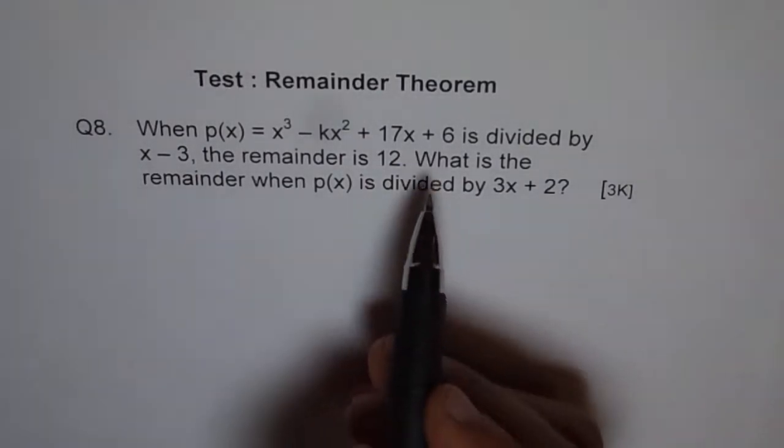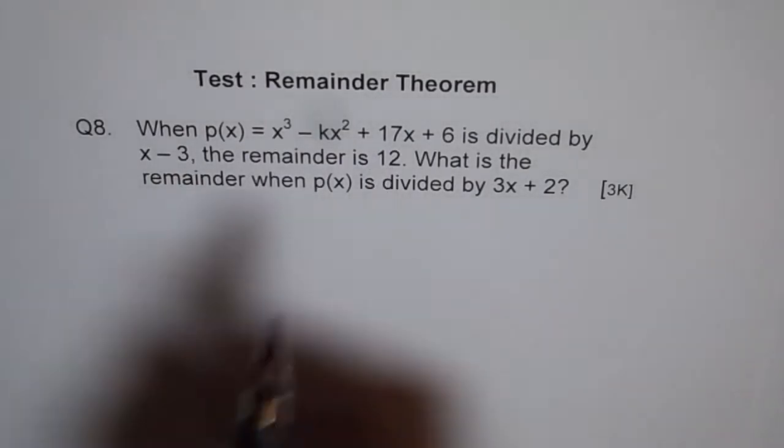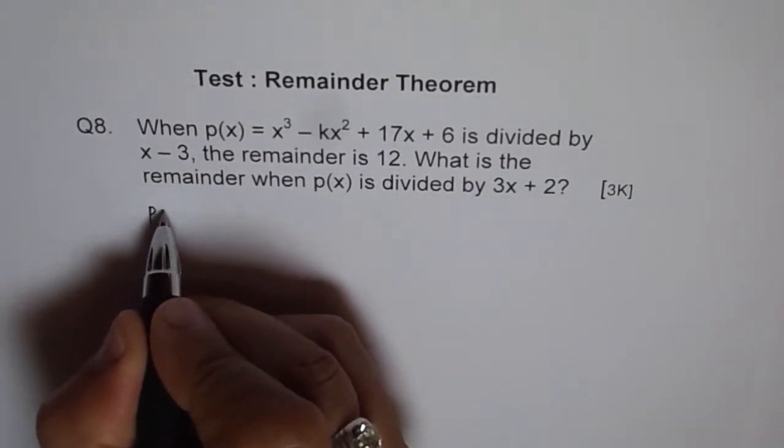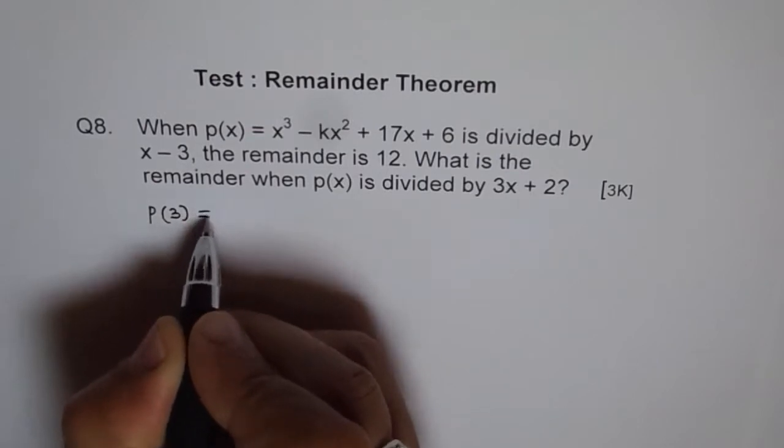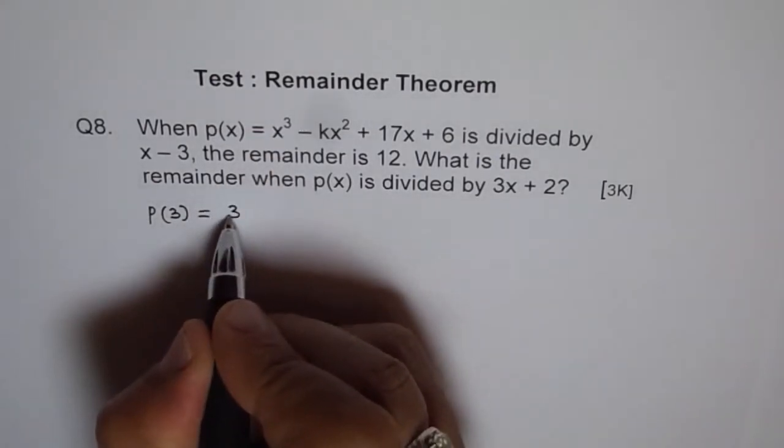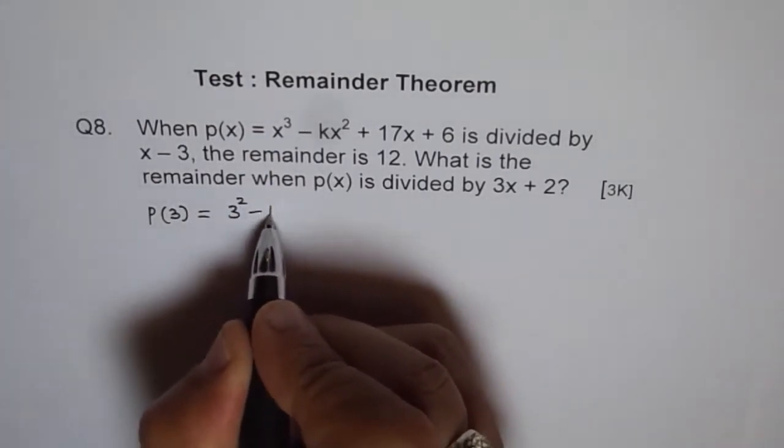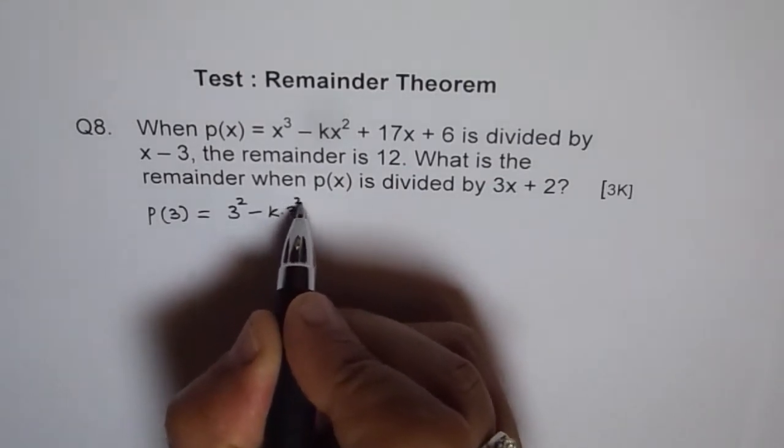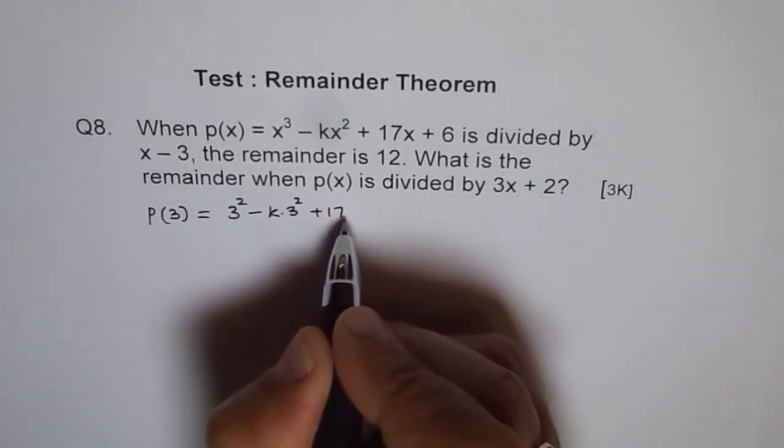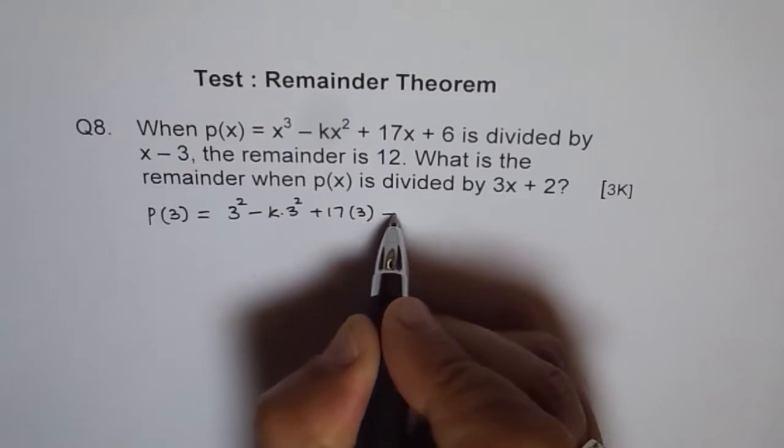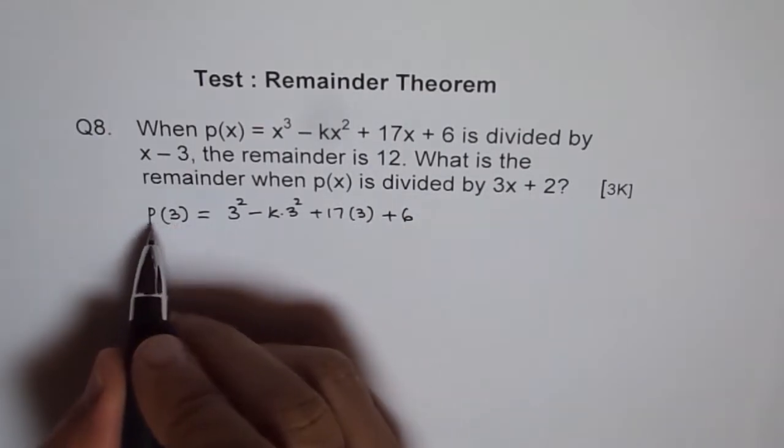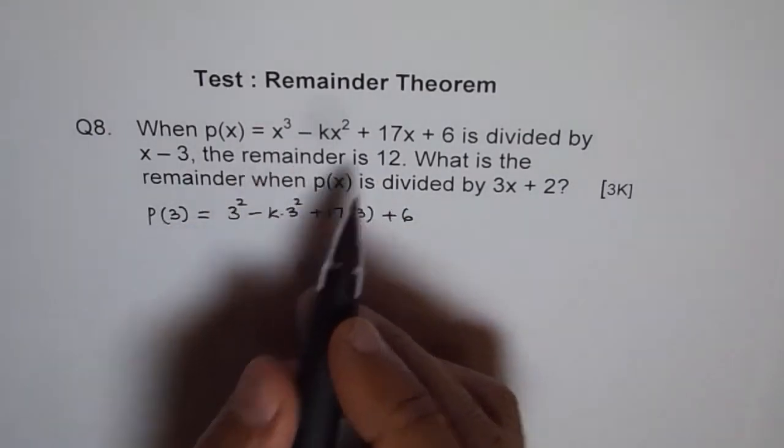When you divide by x minus 3 you get this remainder. Therefore we can find the value of p(3). p(3) is equal to 3 cube minus k times 3 square plus 17 times 3 plus 6. So p(3) is the remainder which is 12.